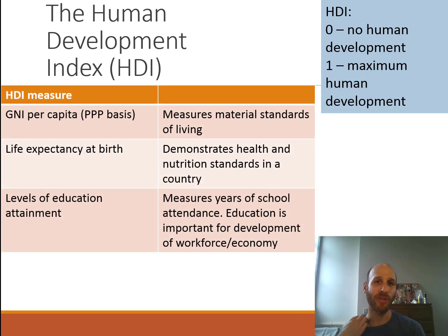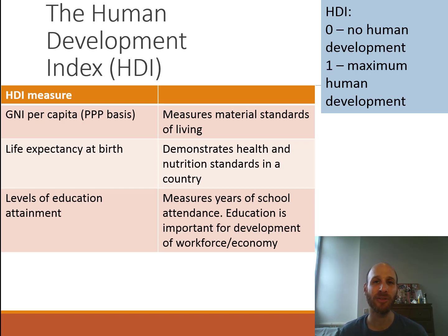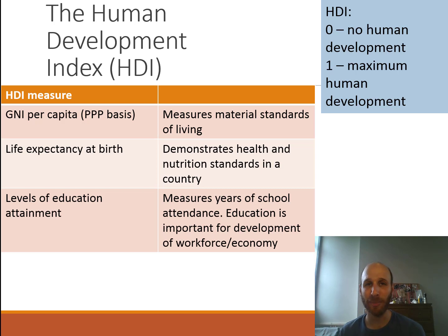There are three components to the HDI. The first one is GNI per capita. We know that GNI per capita is all about material living standards — what people can afford. You can see here it says PPP basis, which stands for purchasing power parity. This essentially equalizes the relative purchasing power of each currency so we can have a common measure across the world, even though each currency is worth a slightly different value. For our purposes, it's a common way of comparing how much income people earn in different countries.